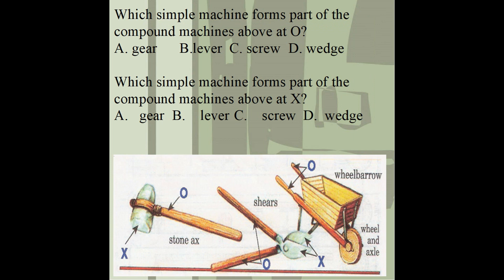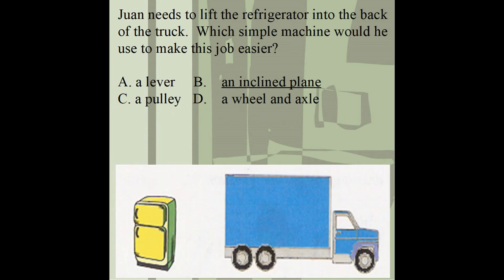Now let's go over a few questions on simple machines. The first question asks: which simple machine forms part of the compound machine above at point O — is it A. a gear, B. lever, C. screw, or D. wedge? The stick part that you are holding is considered the lever, so the answer is B. lever. The second question asks: which simple machine forms part of the compound machine above at point X? In both the stone axe and shears, X is the cutting part, and the cutting part of a simple machine is known as the wedge — so the answer is wedge.